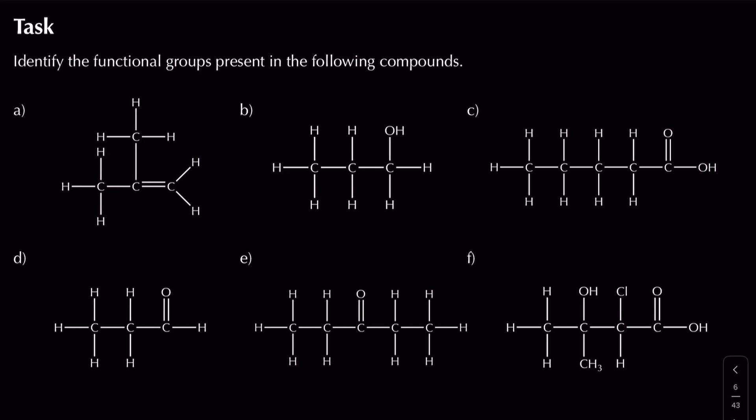Now there's a task: label the different types of functional groups present in the following compounds. Feel free to pause the video and resume when you're ready to go over the answers. Starting with the first one — there's a carbon-carbon double bond, so we have an alkene functional group. We can also say it's unsaturated. It's also a hydrocarbon, but we're just identifying functional groups here.